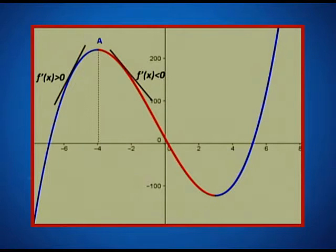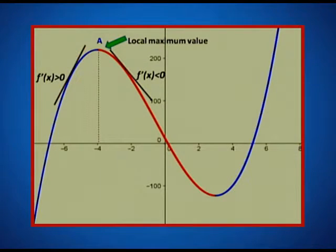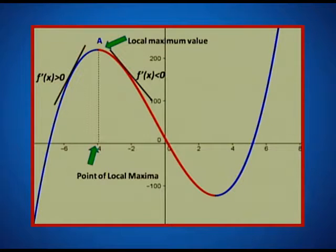The moment you cross over from minus 4 — that is, take values more than negative 4 but close to negative 4 — the slope of the tangent turned into negative; that is, f'(x) is less than 0. In such cases, we say that at A the maximum value is being attained. So the local maximum value is being attained at x equal to A, and the point on the x-axis corresponding to x equal to negative 4 becomes the point of local maxima.